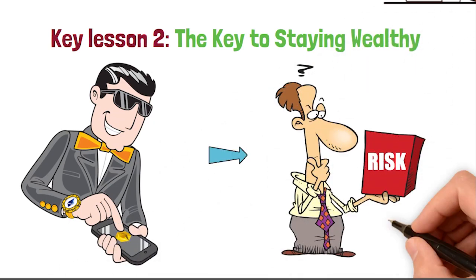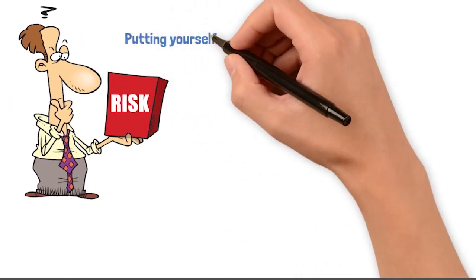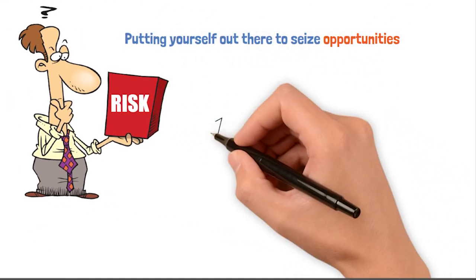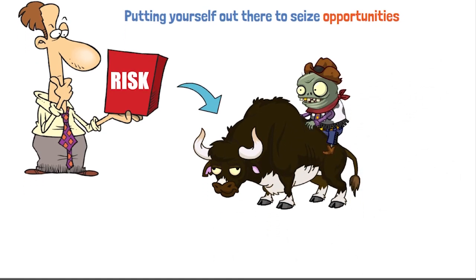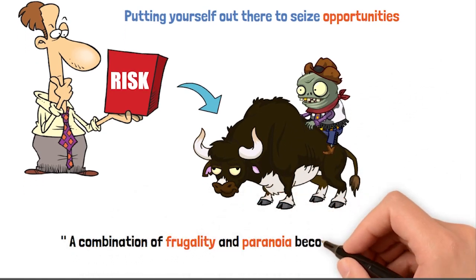There's a significant difference between getting wealthy and staying wealthy. Getting money often involves taking risks, being optimistic, and putting yourself out there to seize opportunities. However, the key to staying wealthy is a whole different ballgame. A combination of frugality and paranoia becomes essential.